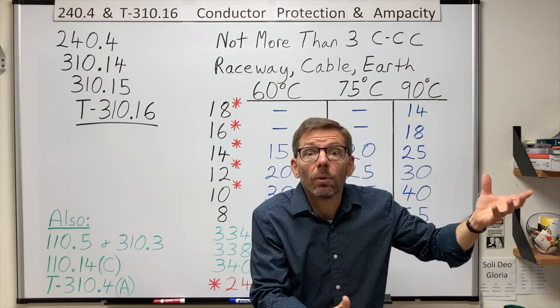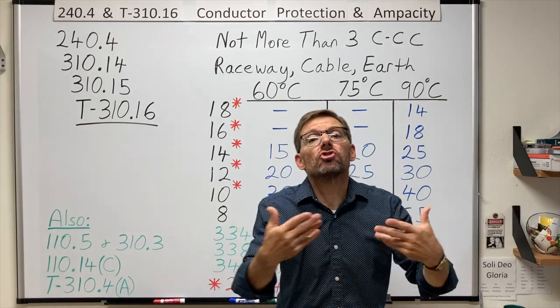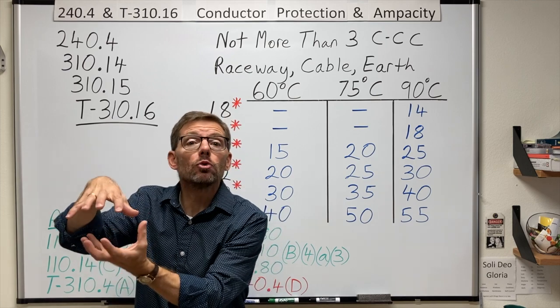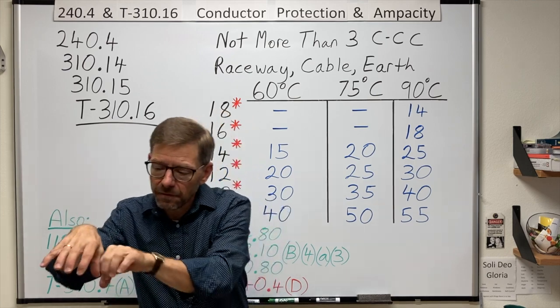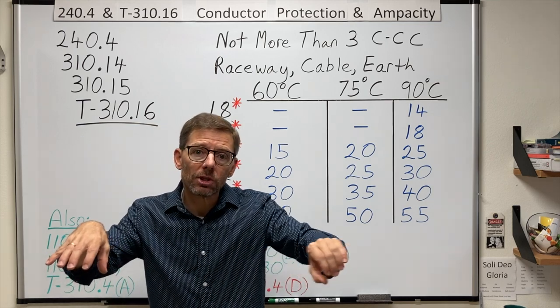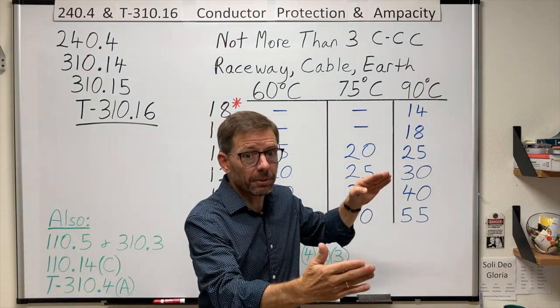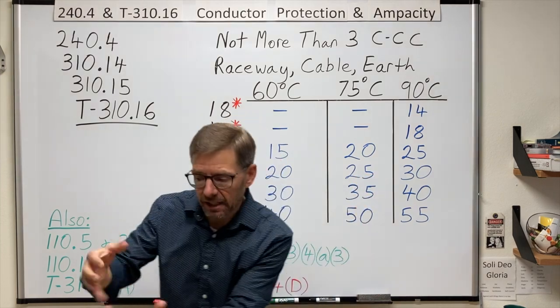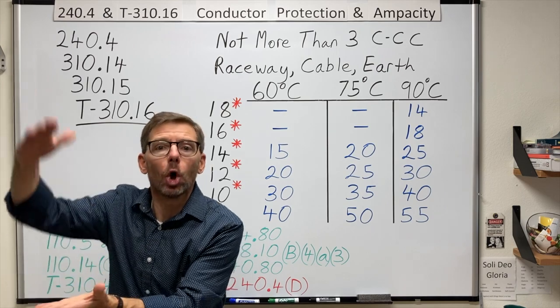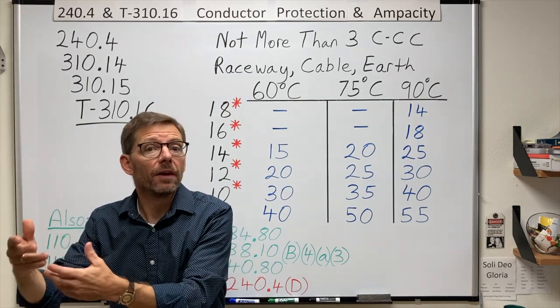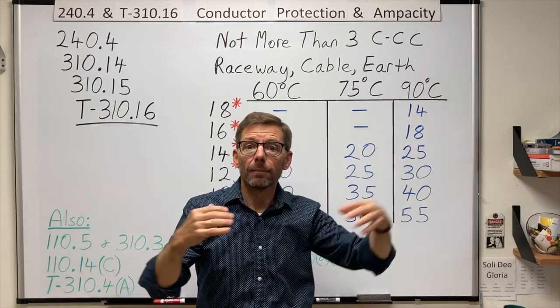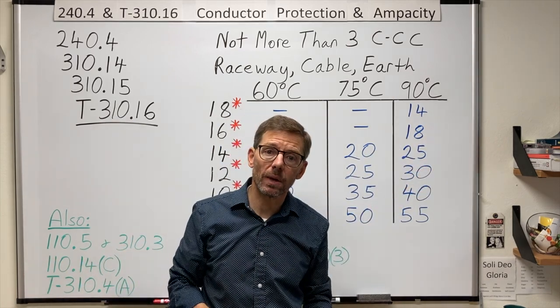And so how would I protect that conductor? Well, generally speaking, we have an overcurrent protective device, a fuse or a circuit breaker, that feeds a conductor. And if that conductor draws too much current for too long a period of time, based on the characteristics of the overcurrent device, the device will open, stopping the current flow and thereby protecting the conductor and anything down line from that overcurrent situation.